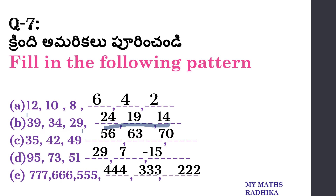Next: 42 plus 7 is 49. 49 plus 7 is 56. 56 plus 7 is 63. 63 plus 7 is 70. Understand?